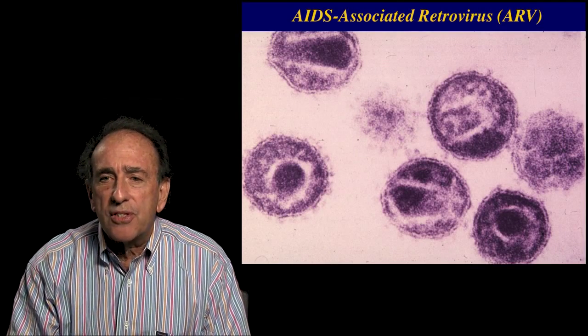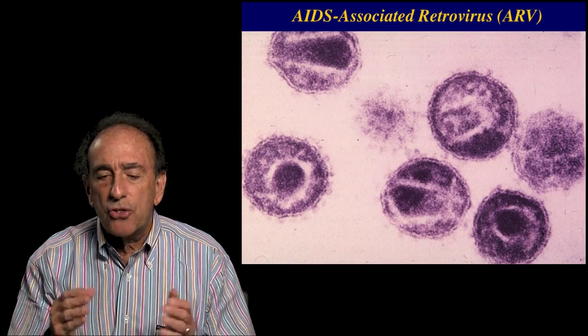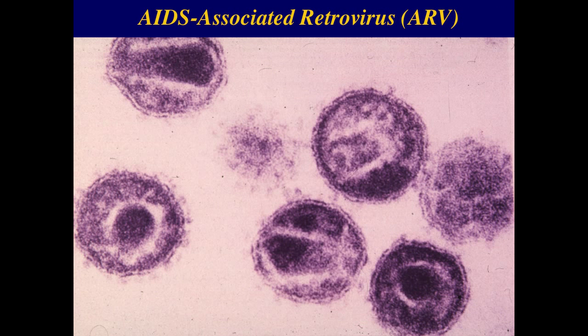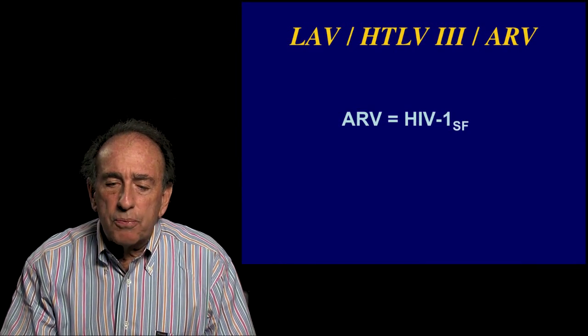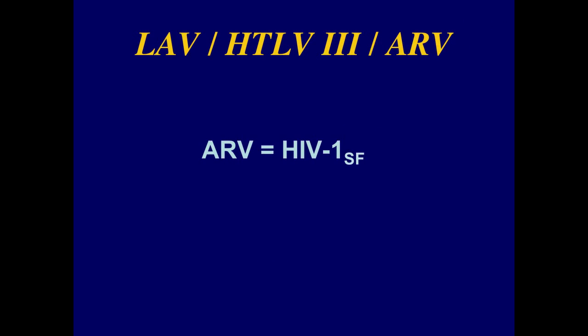Working with these cells, we were able to do electron microscopic pictures and noted the presence of particles similar to retroviruses in the family of lentiviruses. We called this retrovirus the AIDS-associated retrovirus or ARV. Other groups also isolated an AIDS virus — the French called it LAV, a group at NCI called it HTLV-3 — and a committee decided to call these isolates the human immunodeficiency virus or HIV, with subscripts for the city of isolation, such as SF for San Francisco.